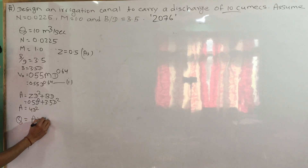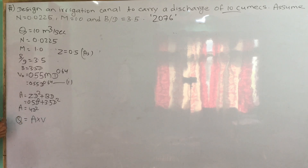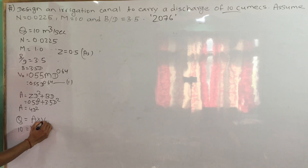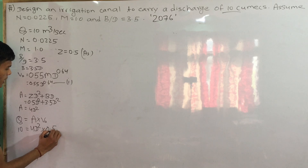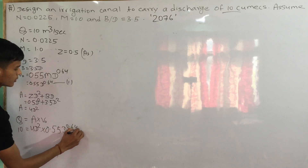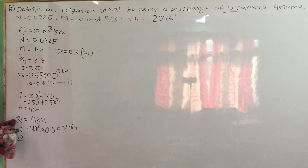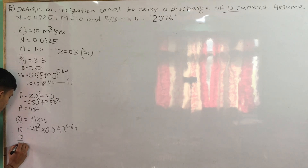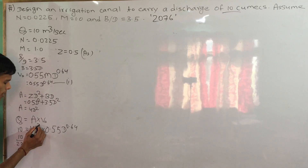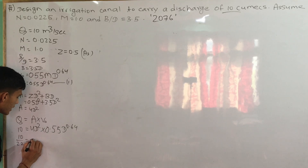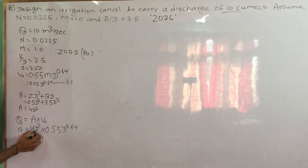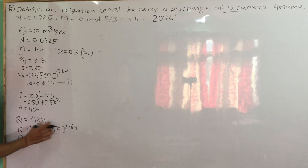Now, Q = A * V_c. We substitute: Q = 4D² * 0.55 * D^0.64. This simplifies to 10 = 2.2 * D^2.64. So D^2.64 = 10 divided by 2.2. This is a simple calculation to solve for D.